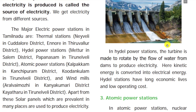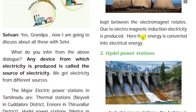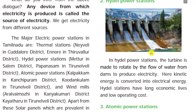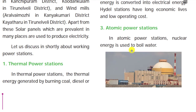The second type is the hydro power station. Hydro means water. The same turbines are rotated with the help of flowing water. Water flows onto the turbine, the turbine rotates, and kinetic energy is converted into electrical energy — kinetic energy meaning rotational or movement energy. Hydro power stations have long economic lives and low operating costs. Unlike thermal power stations where we burn coal, here we only need the flow of water.